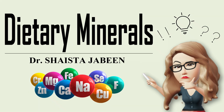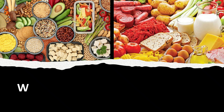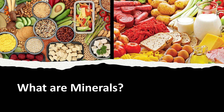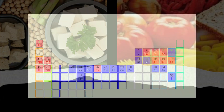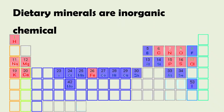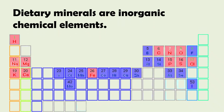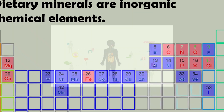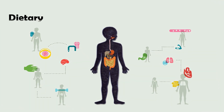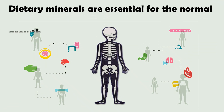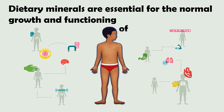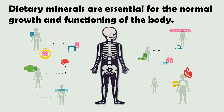What are dietary minerals? These are inorganic chemical elements, as you can see how these elements are arranged in a periodic table. These dietary minerals are essential for the normal growth and functioning of the body.